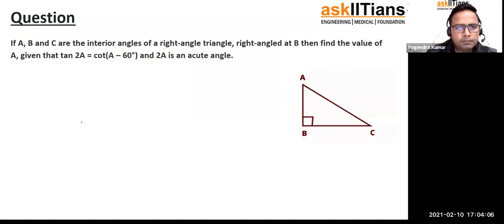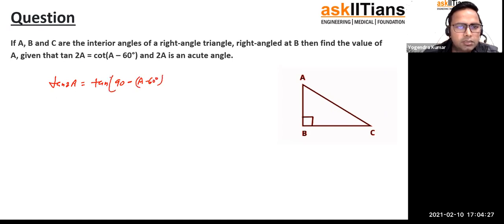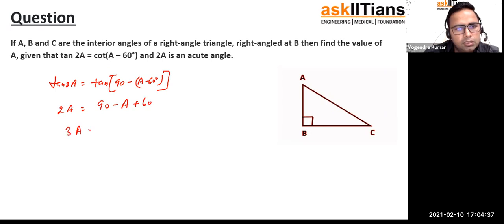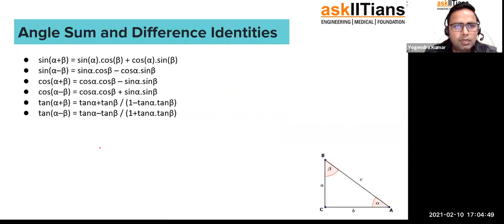Let's do a question using that identity: tan(2A) = cot(A + 60°). Using the complementary angle identity we can write tan(2A) = cot(90° − 2A), so 90° − 2A = A + 60°, which gives 3A = 30°... or alternatively: tan(2A) = cot(A + 60°) means 2A + (A + 60°) = 90°, so 3A = 30°... actually 3A = 150° and A = 50°.